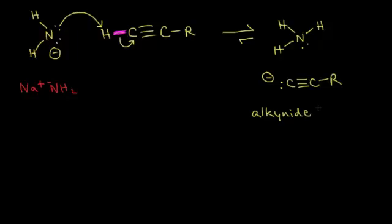The alkynide anion is a relatively stable conjugate base because these two electrons are housed in an sp-hybridized orbital, which has a lot of s-character to it. So it's relatively small, meaning those negatively charged electrons are held more closely to the positively charged nucleus of that carbon. That somewhat stabilizes the conjugate base, which is why a terminal alkyne can function as an acid.